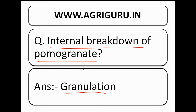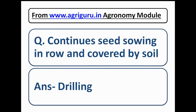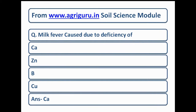Question number 47 from the horticulture module of agriguru.in: internal breakdown of pomegranate — the answer is granulation. Question number 48 from agronomy: continuous seed sowing in a row and covered by soil — the answer is drilling. Question number 49: milk fever is caused due to deficiency of what? The answer is calcium.